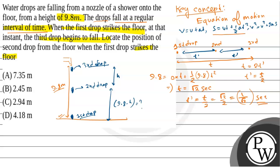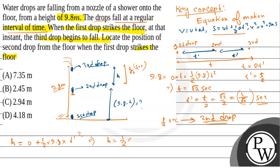The second drop has been falling for t_dash = 1/√2 seconds. To find h, the distance fallen by the second drop: h = ut_dash + ½a·t_dash². Since initial velocity u = 0, h = ½(9.8)·(1/√2)² = ½(9.8)·(1/2) = 9.8/4 = 2.45 meters.